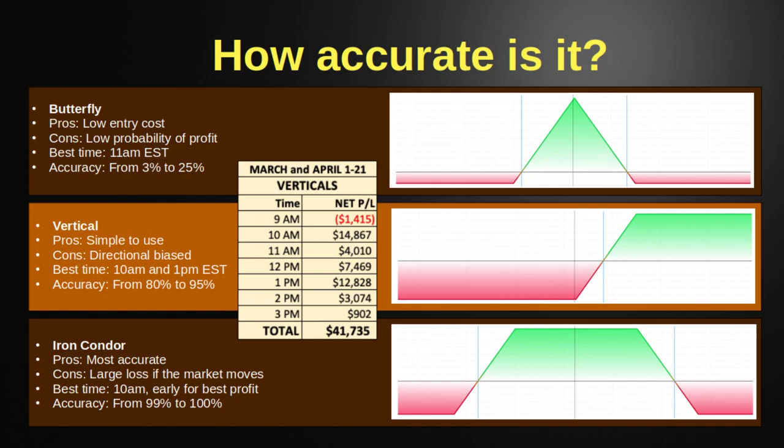This is still an early version of the software, but if you blindly took every single vertical trade it would have netted you about $41,000.